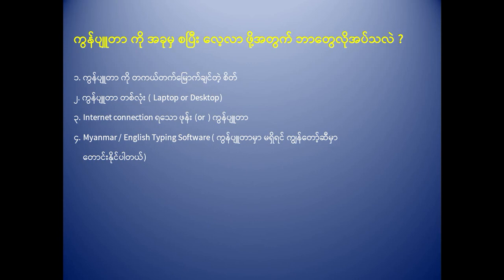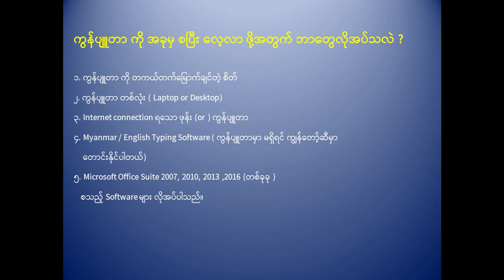We will use the internet to download. This is the Microsoft Office. Now we can also download Microsoft Office 2007, 2010, 2013, 2016, and then we can download Microsoft Word.